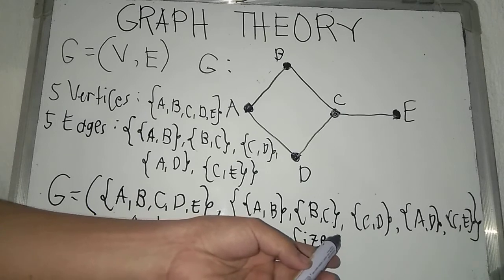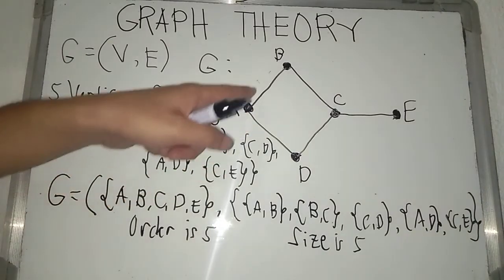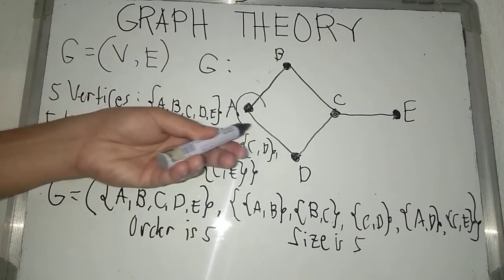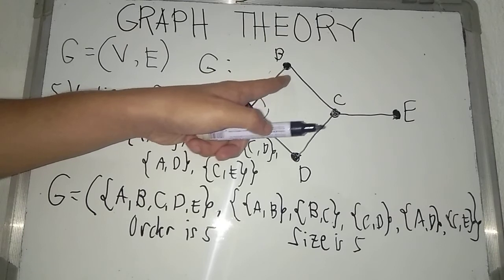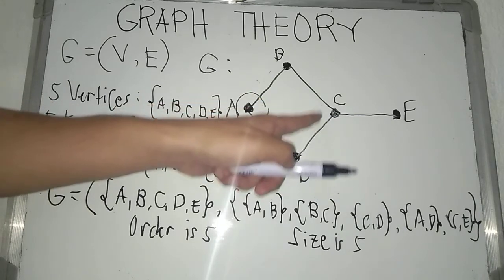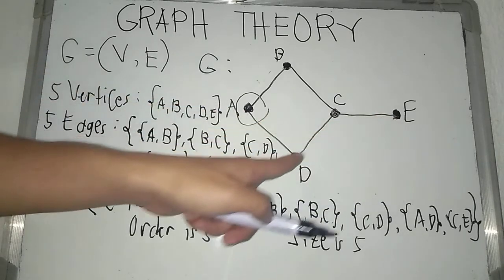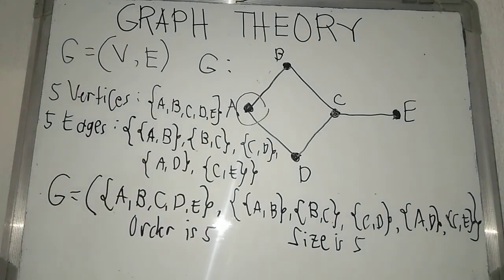Now, the degree, when you say degree, it's actually the number of edges incident to a particular vertex. So, the degree of A is two, because there are two edges incident to vertex A. The degree of vertex B is two, because there are two edges incident to B. The degree of vertex C is three, because there are three edges incident to C. The degree of E is one, because there is only one edge incident to vertex E. And the degree of vertex D is also two.